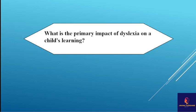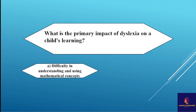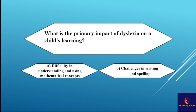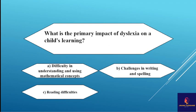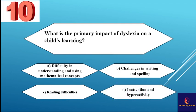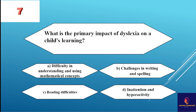Next question: which is the primary impact of dyslexia on a child's learning? Options: difficulty in understanding and using mathematical concepts, challenges in writing and spelling, reading difficulties, and challenges in attention and hyperactivity. The correct answer is reading difficulties.